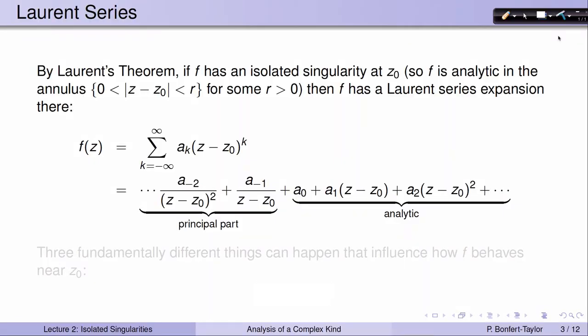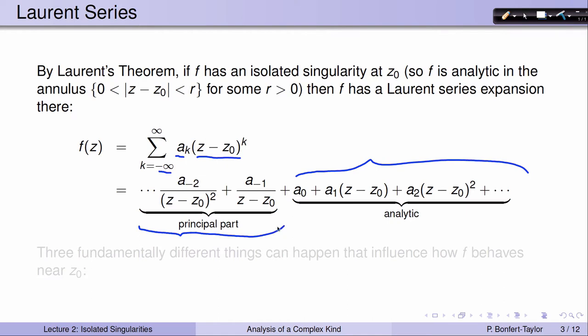Now if I have a function with an isolated singularity at z0, so f is analytic in an annulus where the inside component has radius 0 and the outside component is r, then by Laurent's theorem, f must have a Laurent series expansion in that annulus. The Laurent series expansion is of the form: an infinite sum with coefficients a_k times (z minus c0) to the k, where the sum goes from negative infinity to positive infinity. I have a part that looks just like a Taylor series — only positive powers of (z minus c0) — but I also have negative powers of (z minus c0), and that's called the principal part of this Laurent series.